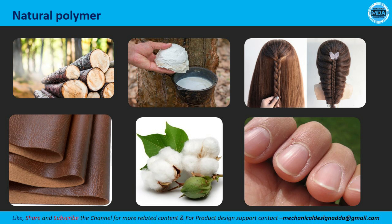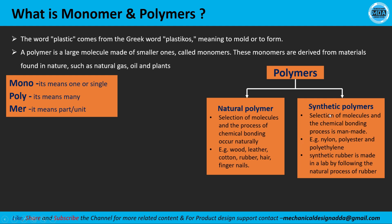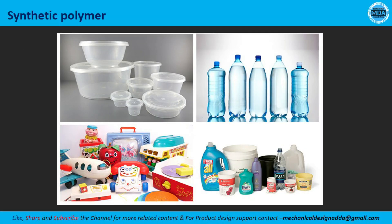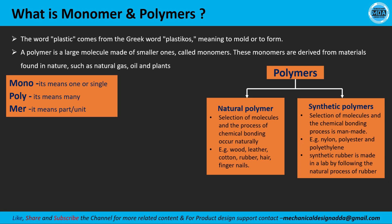In natural polymers, the monomers are naturally bonded together forming things like wood and leather. The other type is synthetic polymers — man-made polymers that we produce in the lab. With chemical bonding, we force all the monomers to come together and form the polymer.